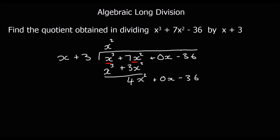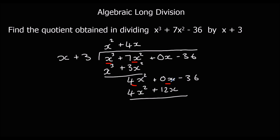Repeat: 4x squared divided by x is 4x. Multiply 4x by both terms: 4x times x is 4x squared, 4x times 3 is 12x. Subtract: 4x squared minus 4x squared is nothing. 0x minus 12x gives minus 12x. Bring down the next term. Then minus 12x divided by x is minus 12. Multiply: minus 12 times x is minus 12x, minus 12 times 3 is minus 36.